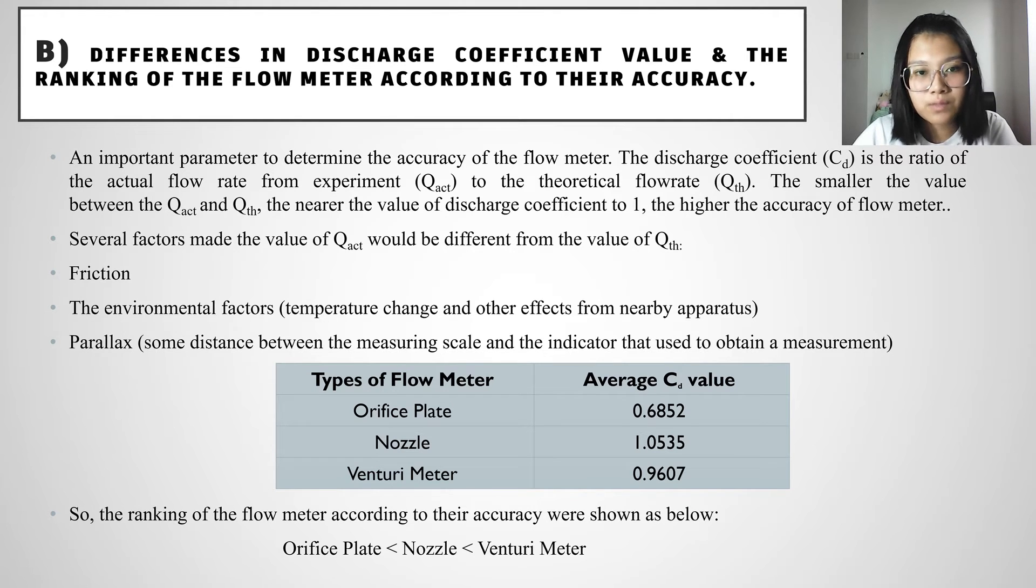The smaller the value between the actual value and the theoretical value, the nearer the value of the discharge coefficient to 1, and then the higher the accuracy for the flow meter. And hence, we have several factors that makes the actual value different from the theoretical value.